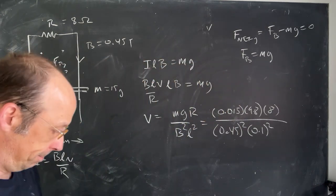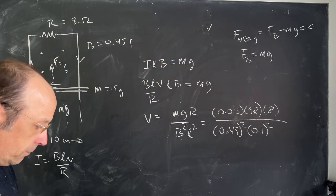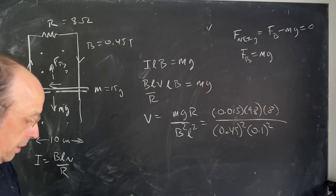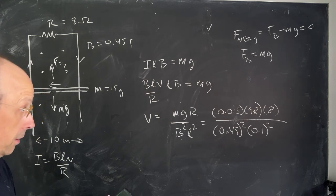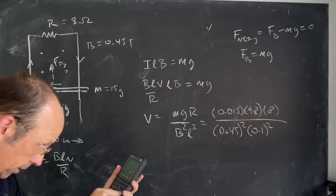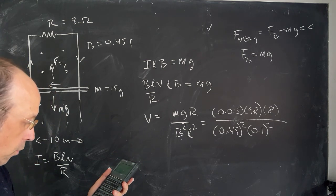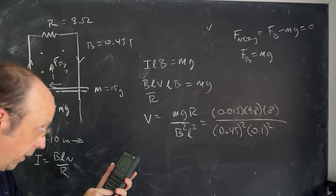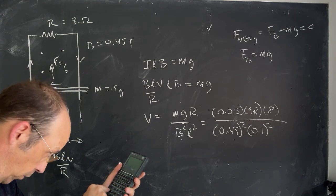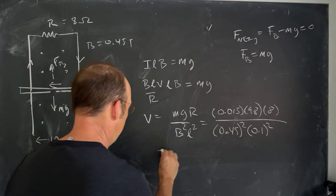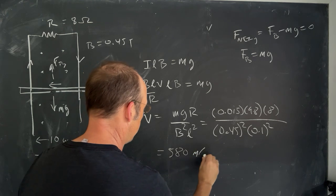Calculator time. Drop. Okay. So I get 0.015. Enter 9.8 times. 0.45 squared. Nope. I dropped that. 0.45 squared. I did that. Squared. Divided by 0.1 squared. Divided by. And I get 580 meters per second.